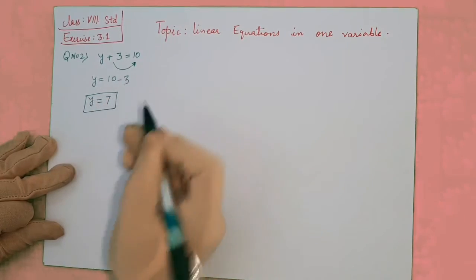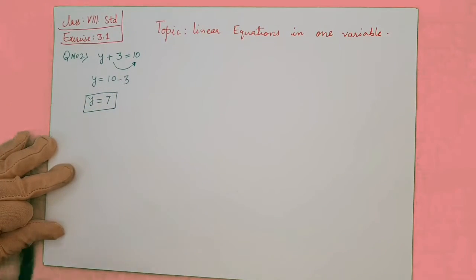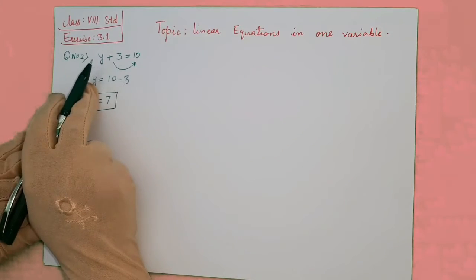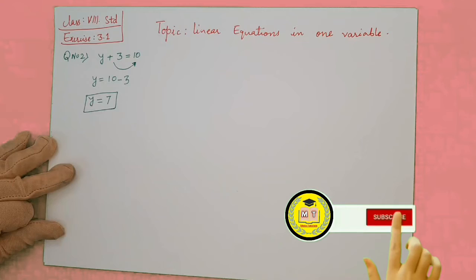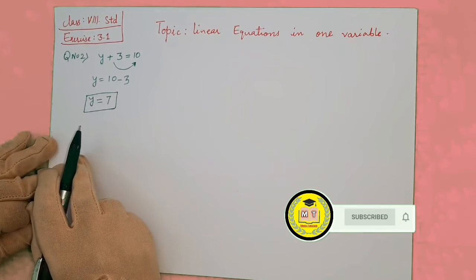is 7. How can we verify? 7 plus 3 equals 10, so 10 equals 10, which means the solution we got, y equals 7, is correct.